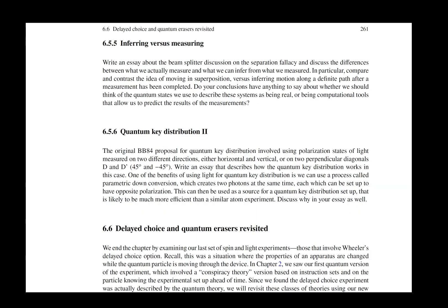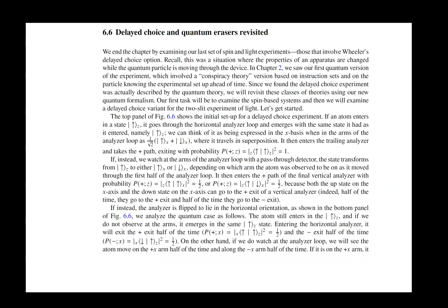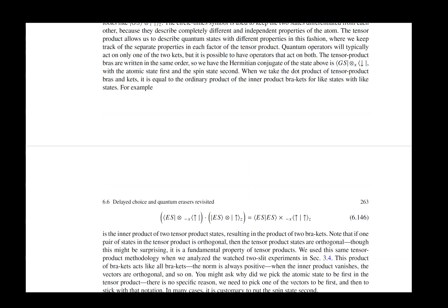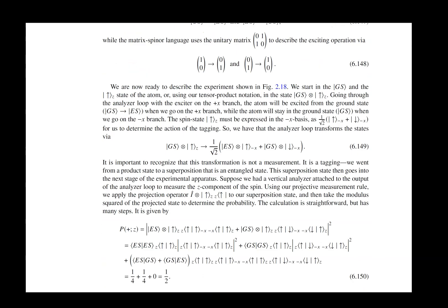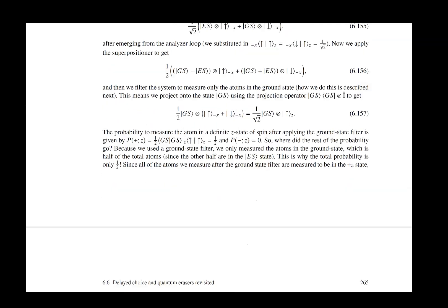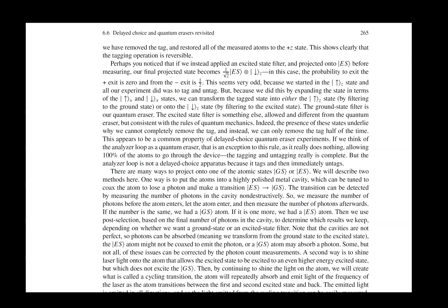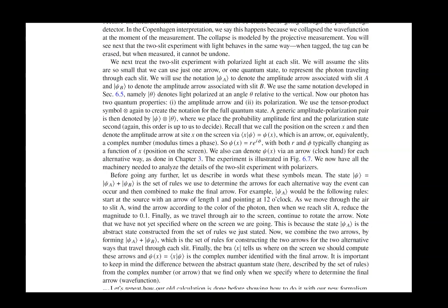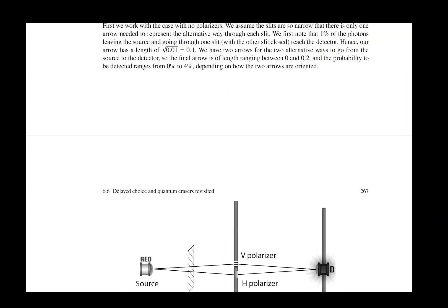And finally, we take a look at the delayed choice and quantum erasers using our Dirac notation. These are more complicated experiments, so it takes a little bit more time to go through them. And you have to be very careful with how you manipulate the different states and how you manipulate inner products that you then are going to square to determine probabilities and so forth. But we go through all of those details here.